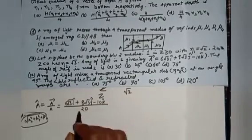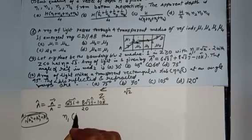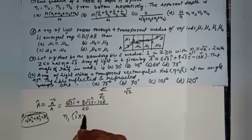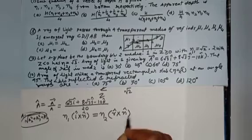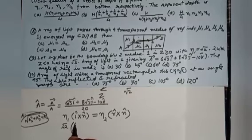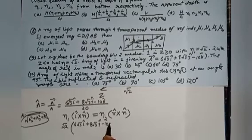Applying the modified Snell's law: eta1 × (incident unit vector) × n-cap = eta2 × (refracted unit vector) × n-cap. eta1 is root 2. The incident unit vector is (6√3 i-cap + 8√3 j-cap − 10 k-cap) / 20, cross multiplied with n-cap = k-cap. We need to find the refracted unit vector. n-cap here is k-cap, the unit vector along the z-axis, since it is normal to the xy-plane.